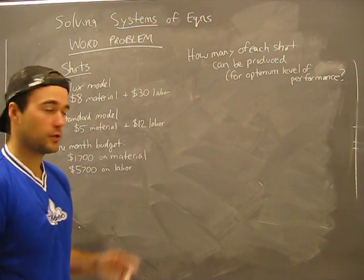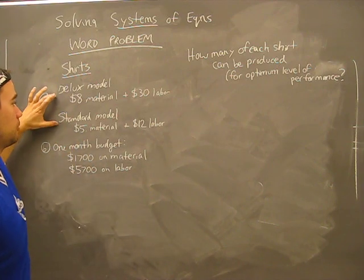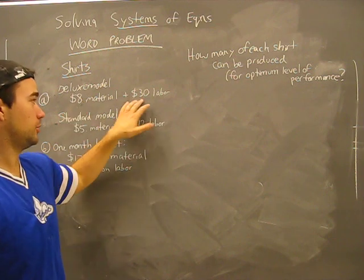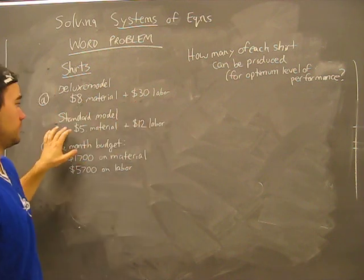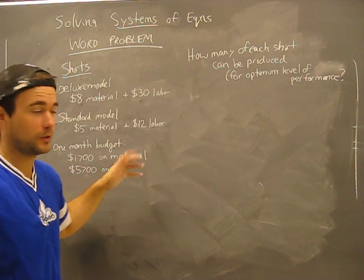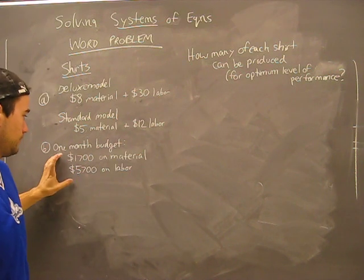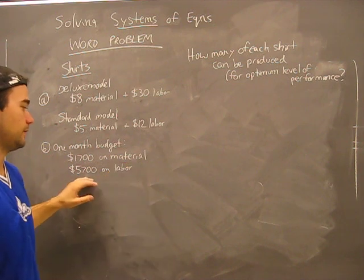You have two types of shirts that you sell: a deluxe model and a standard model. Here's your cost for your deluxe: $8 for material plus $30 labor. Here's your standard model: $5 for material plus $12 labor.